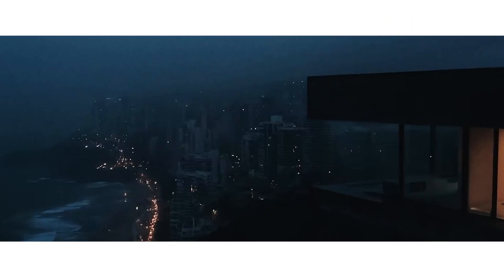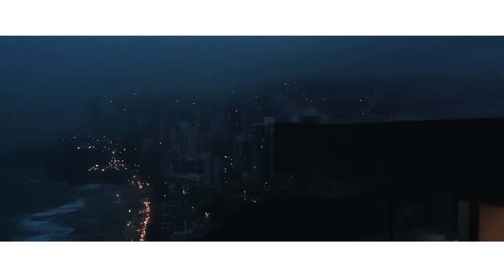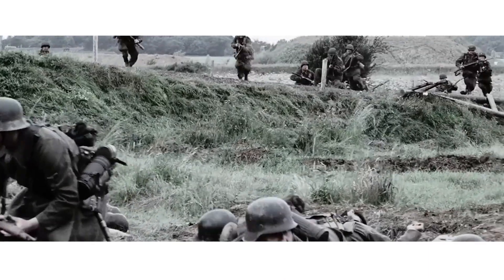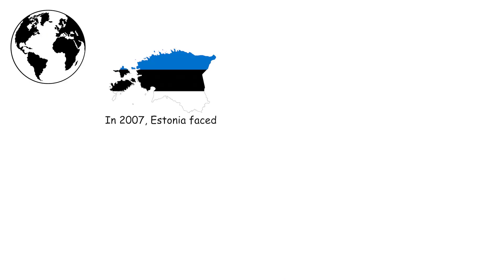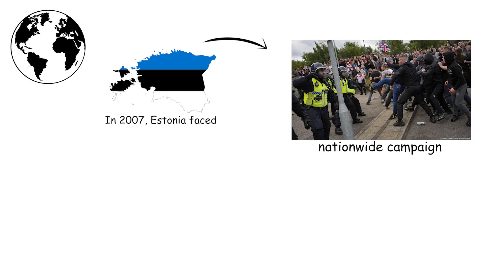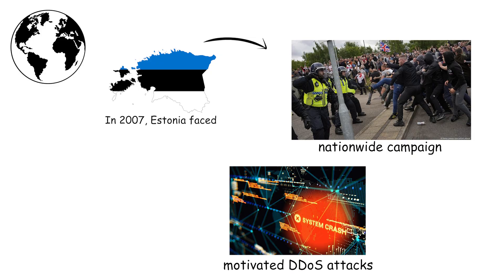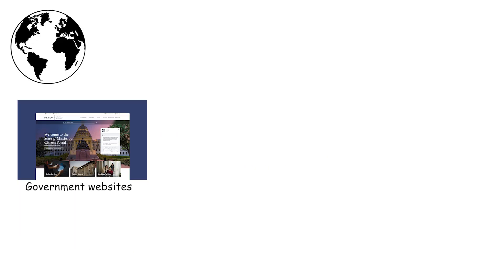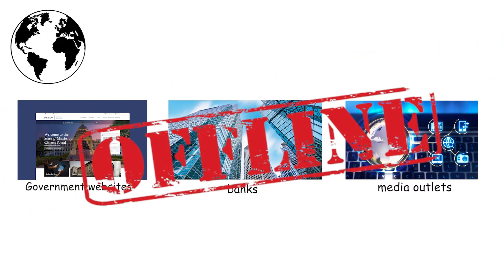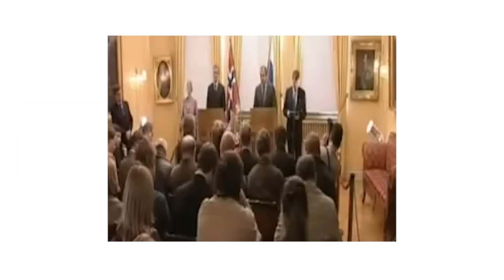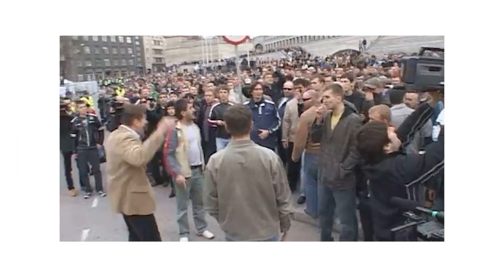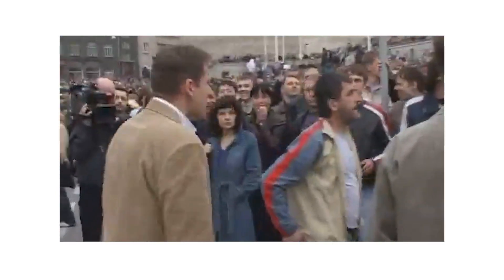Historically, entire national online services have been taken offline for days in response to political disputes or as a diversion during military moves. In 2007, Estonia faced a nationwide campaign of politically motivated DDoS attacks after a dispute over a Soviet-era monument. Government websites, banks, and media outlets were knocked offline for nearly three weeks, timed to political tensions.